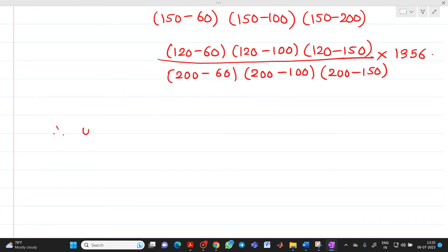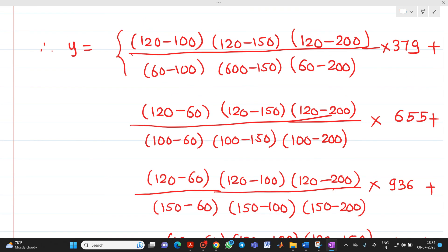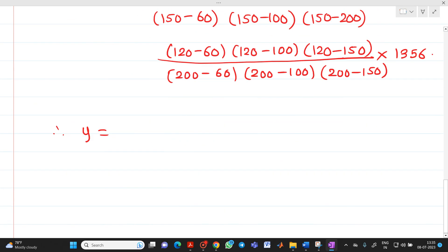So, therefore, we will solve this term by term. If we solve this term, we will get answer as minus 36.0952. If we solve this term, we will get 471.600. If we solve next, we will get 399.3600. And last, if we solve, we will get minus 69.7371.